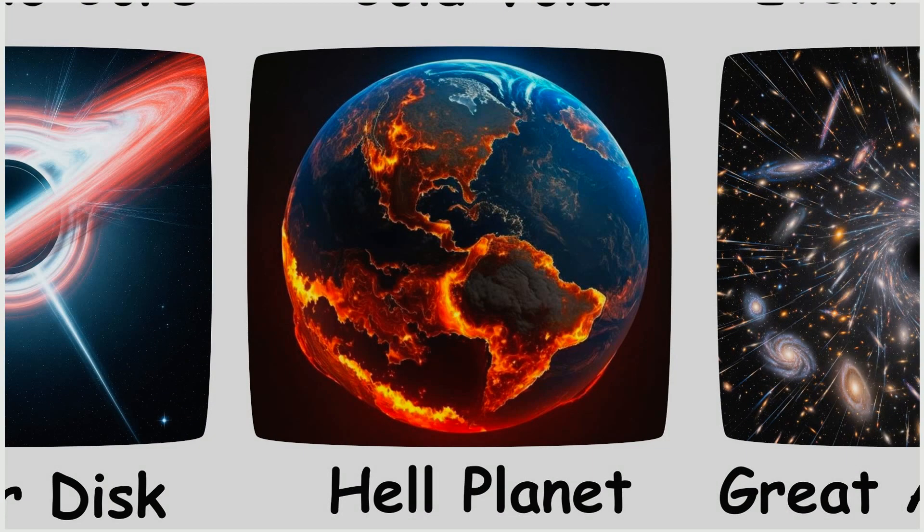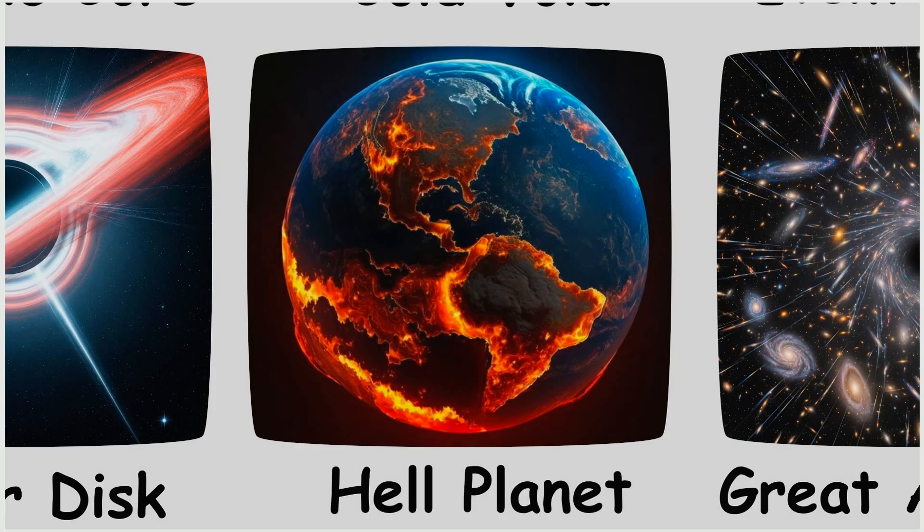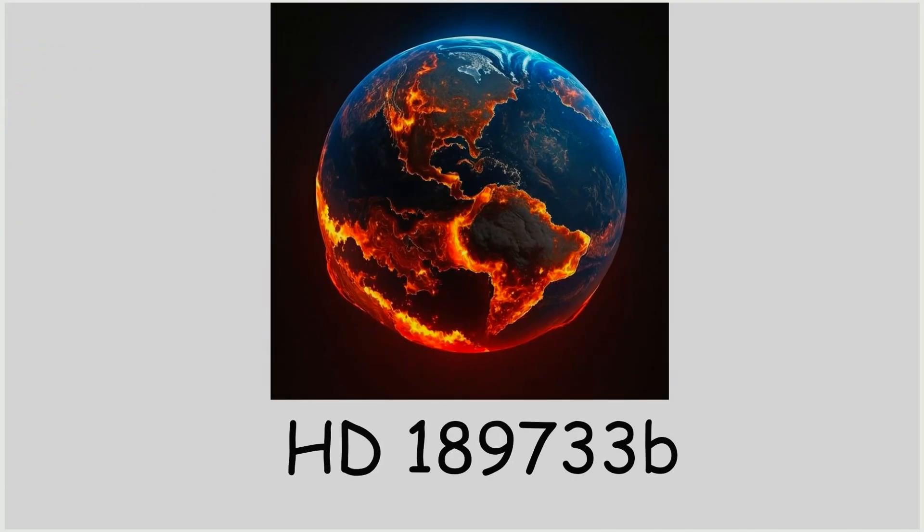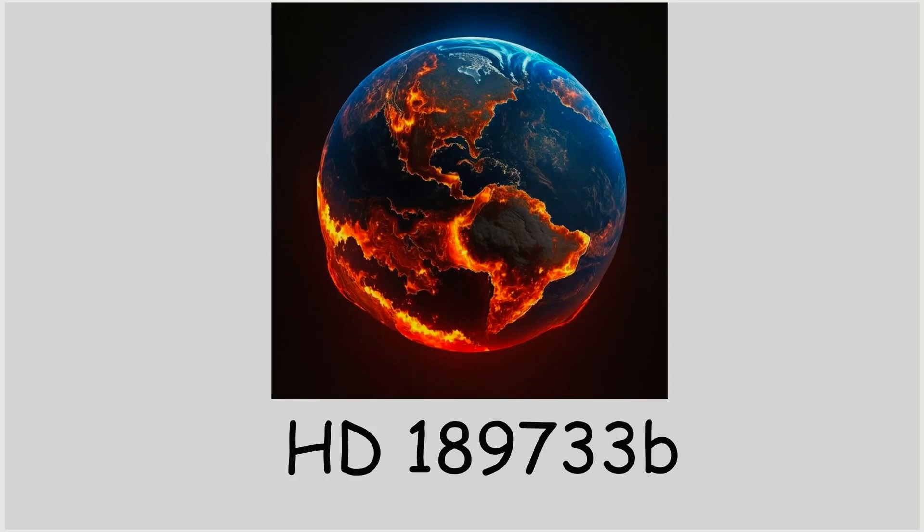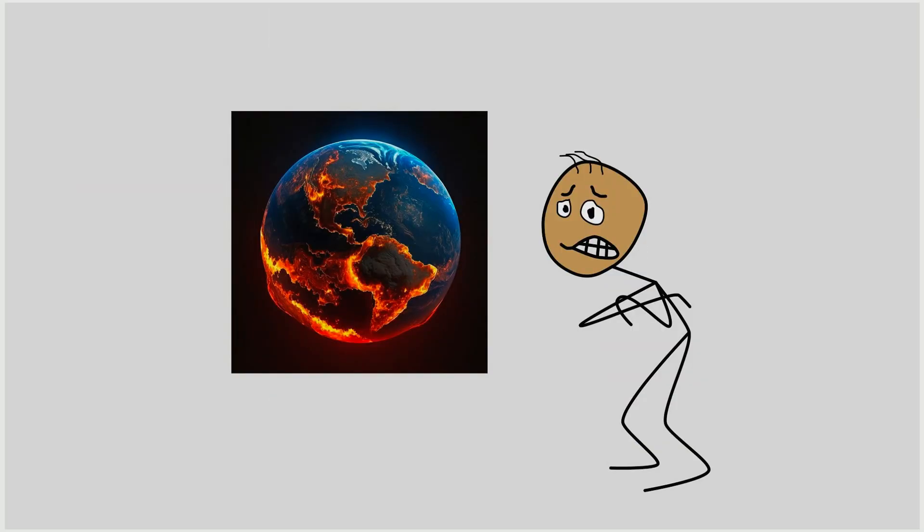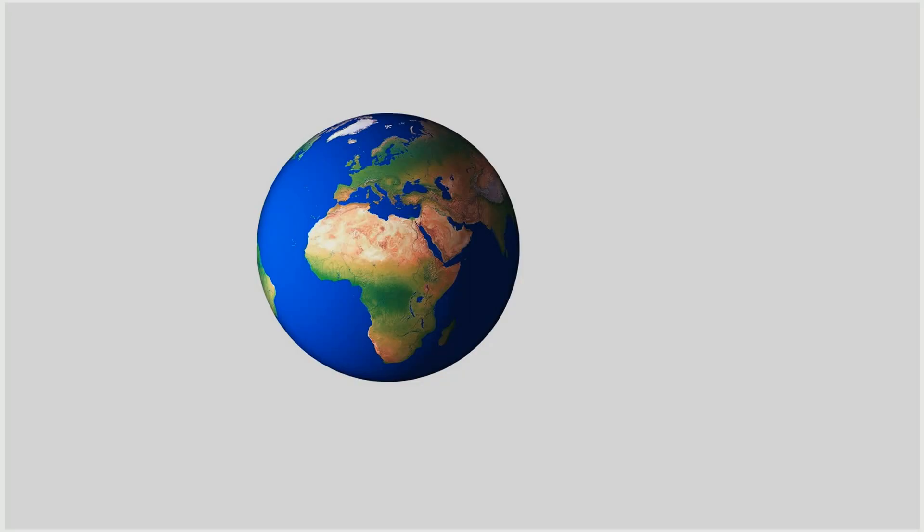The Hell Planet, HD 189733 b. HD 189733 b is a gas giant exoplanet located about 64 light-years from Earth. What makes it terrifying is its weather. The planet's deep blue hue, once mistaken for oceans, is caused by silicate particles in its atmosphere—glass.